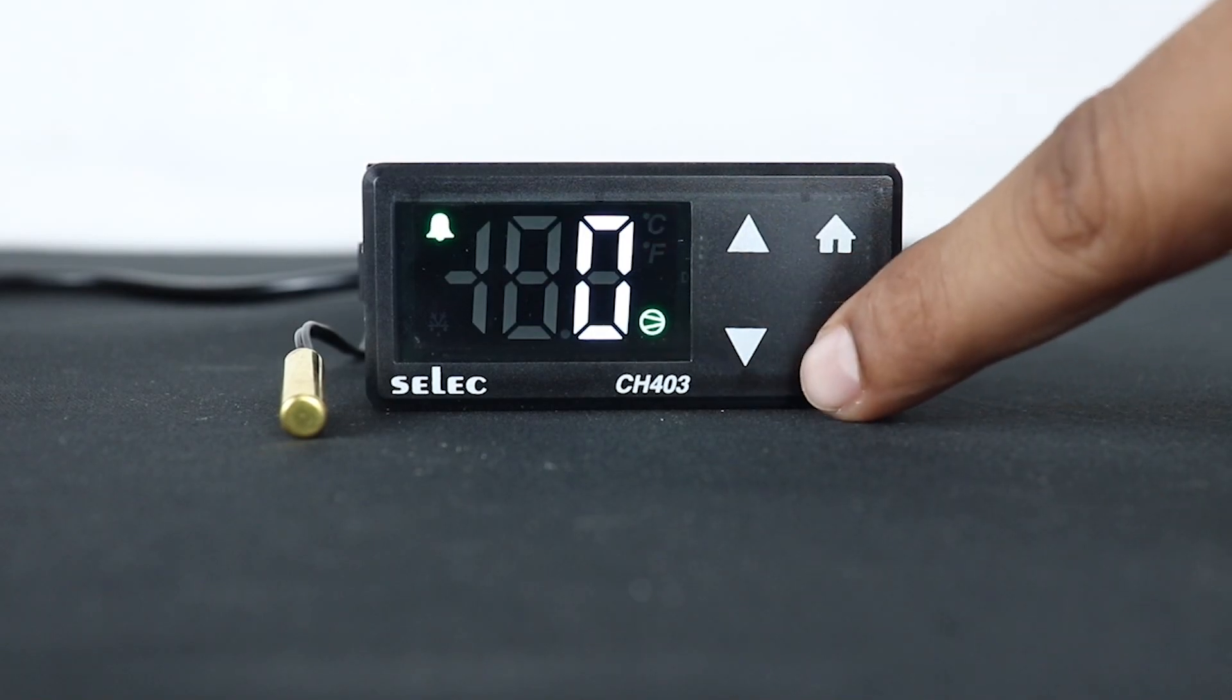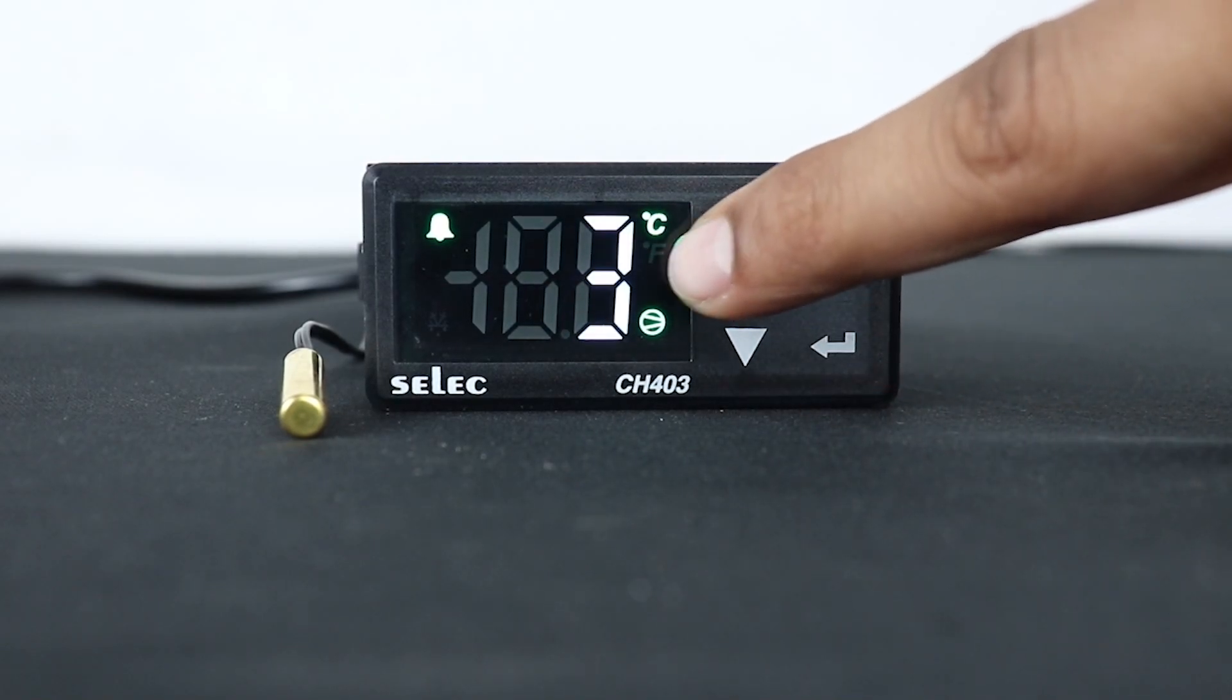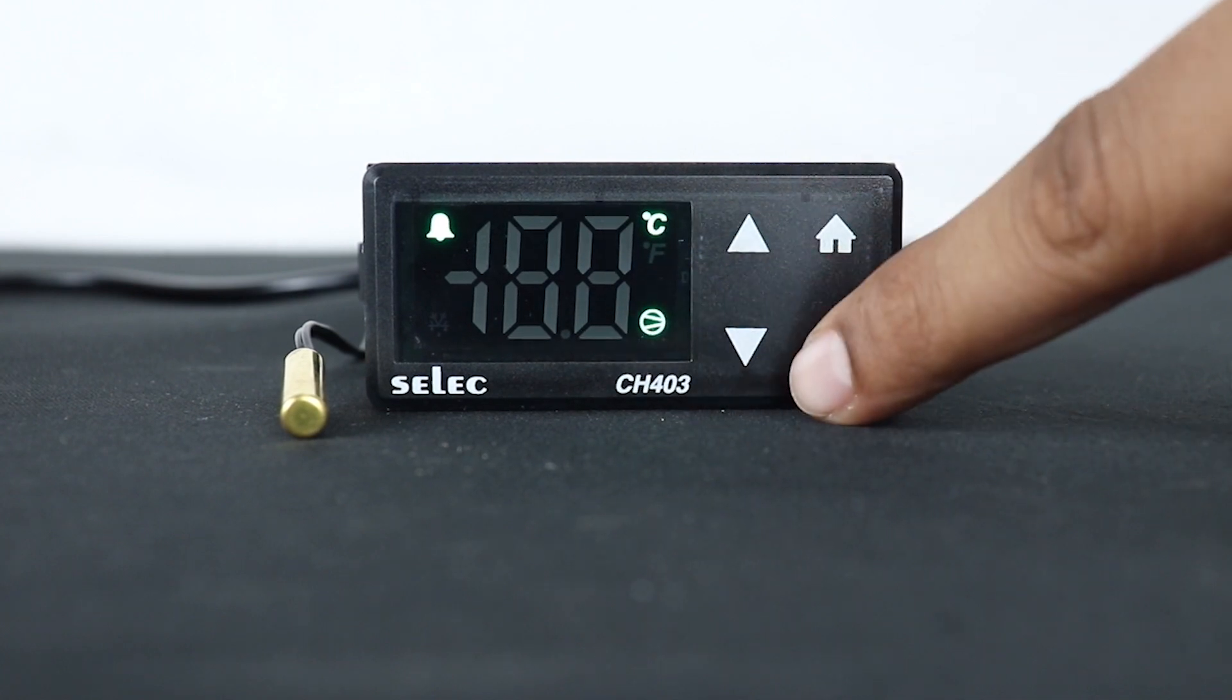Parameter P7 describes defrost time function, which allows user to change time on which the relay or compressor turns off during defrosting.